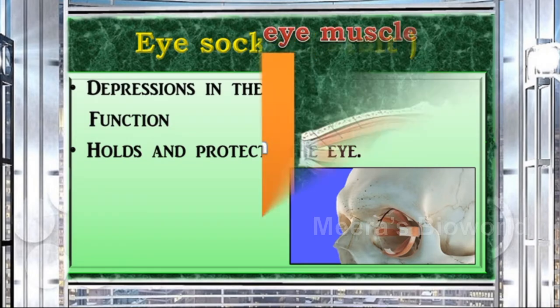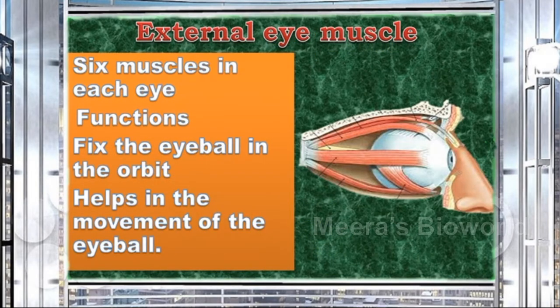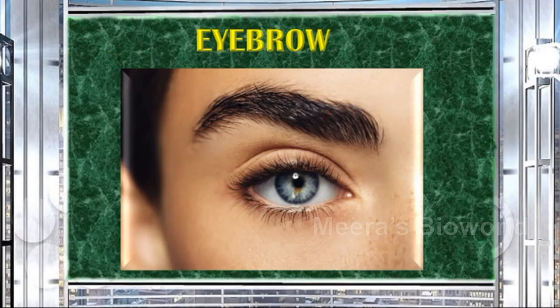External eye muscles: there are six eye muscles in each eye — three pairs. Their functions are to fix the eyeball in the orbit and to help in the movement of the eyeball.